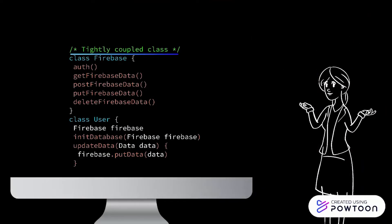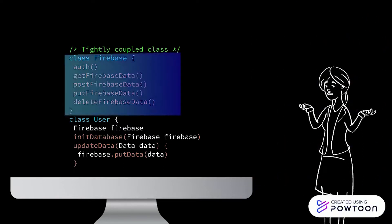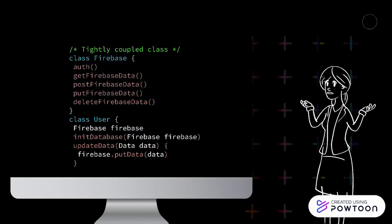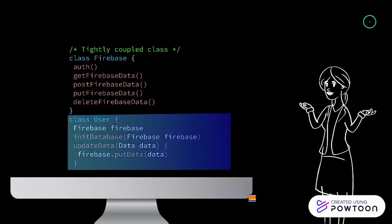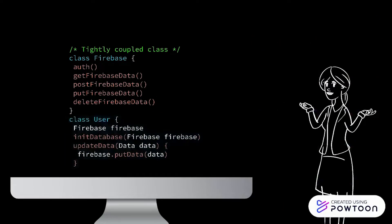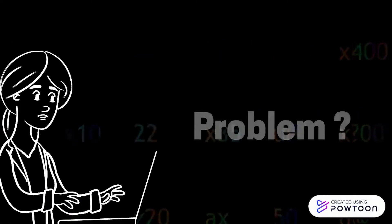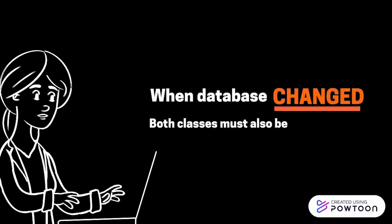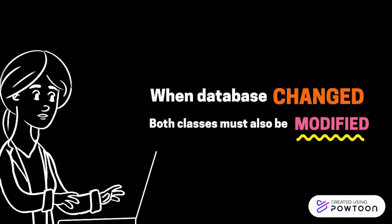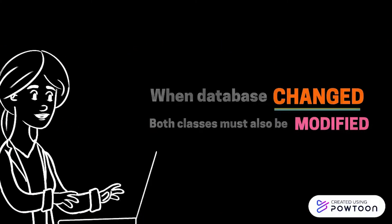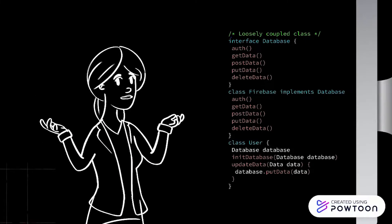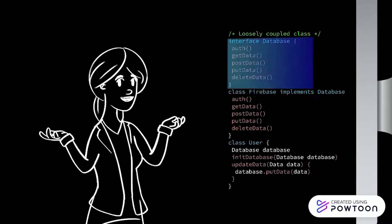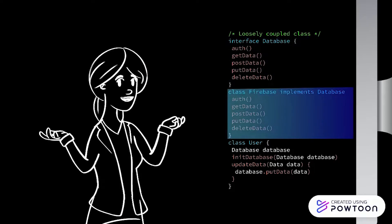For example, the tightly coupled classes use Firebase as the database. The Firebase class contains all the methods specific to the Firebase API, and the user class is the actor that utilizes the Firebase functions. The problem with this approach is that if the database must be changed, both the Firebase class and the user class must also be modified to accommodate the change.